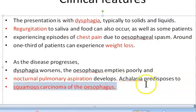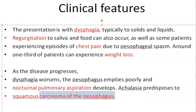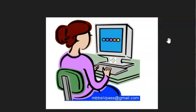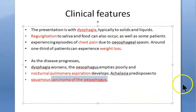As a final clinical feature, carcinoma of the esophagus can develop — specifically squamous carcinoma of the esophagus. This esophagus has suffered so much that finally it can become a carcinoma of the esophagus.